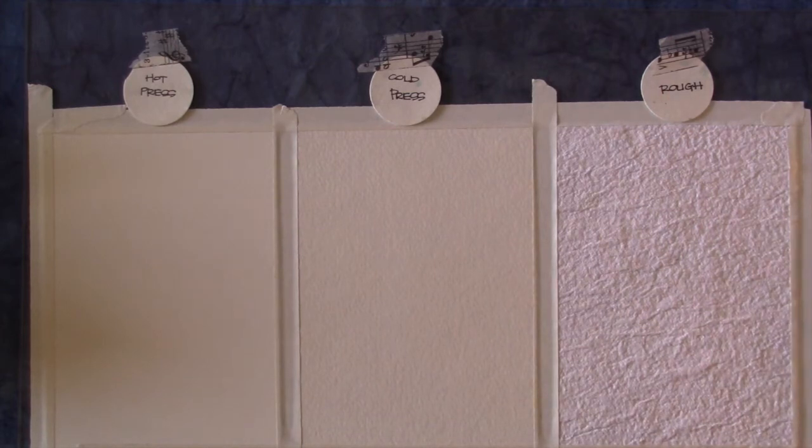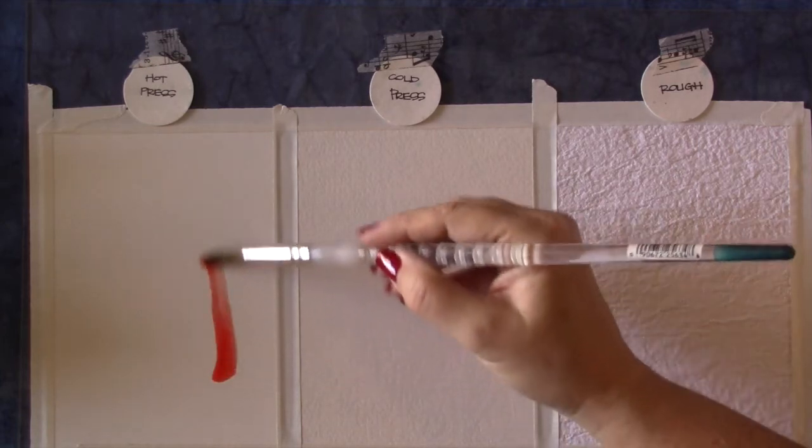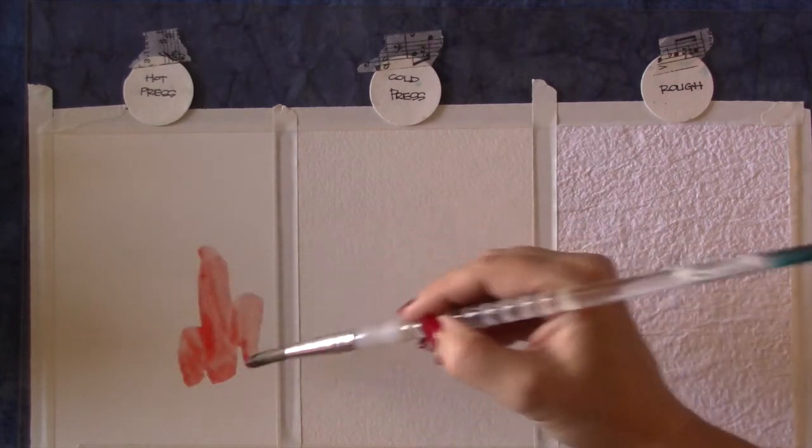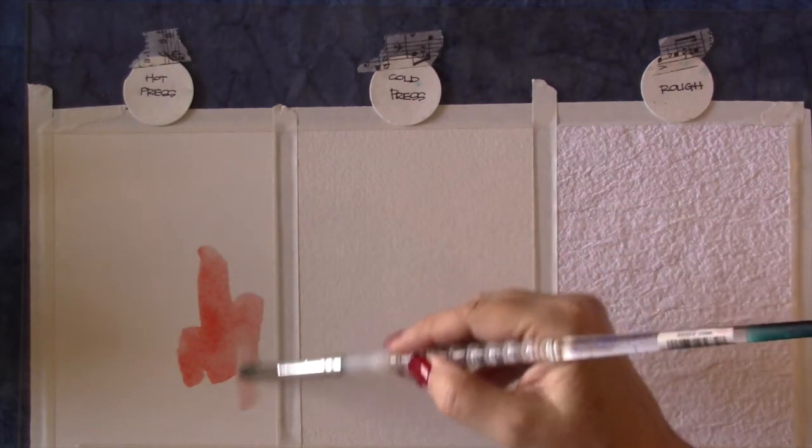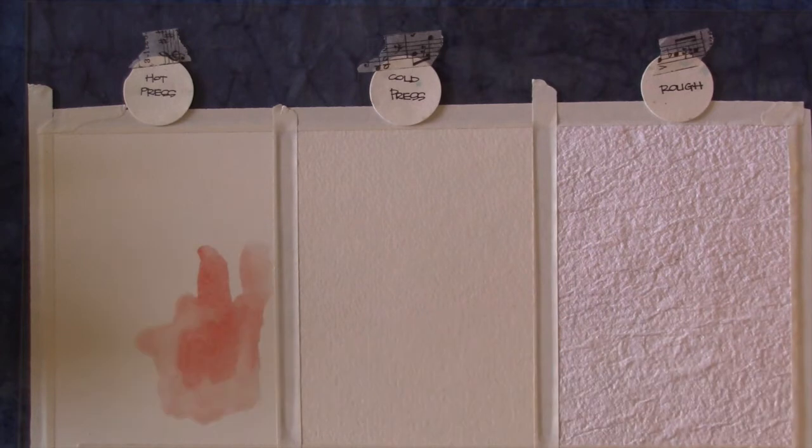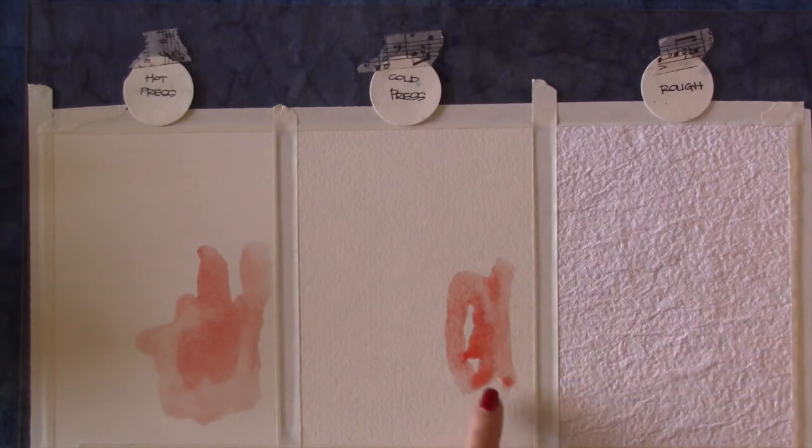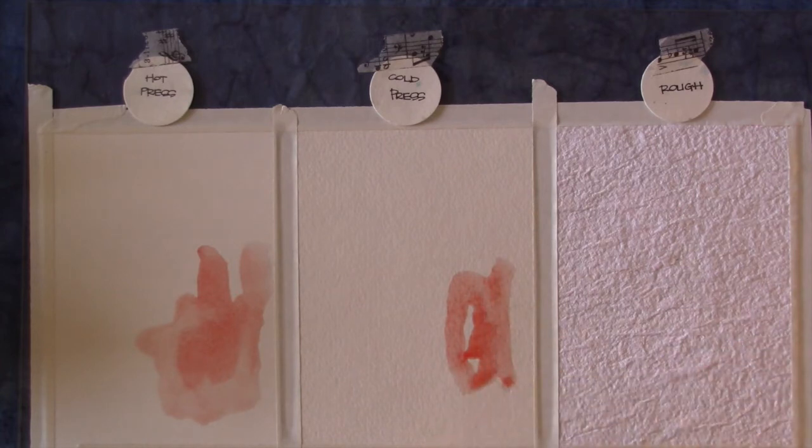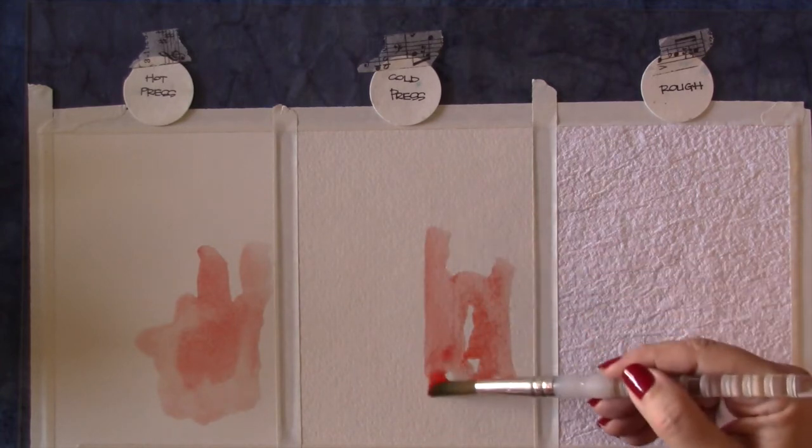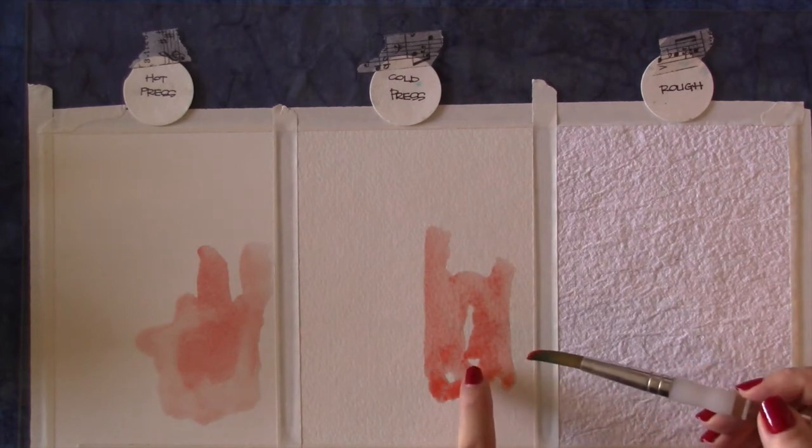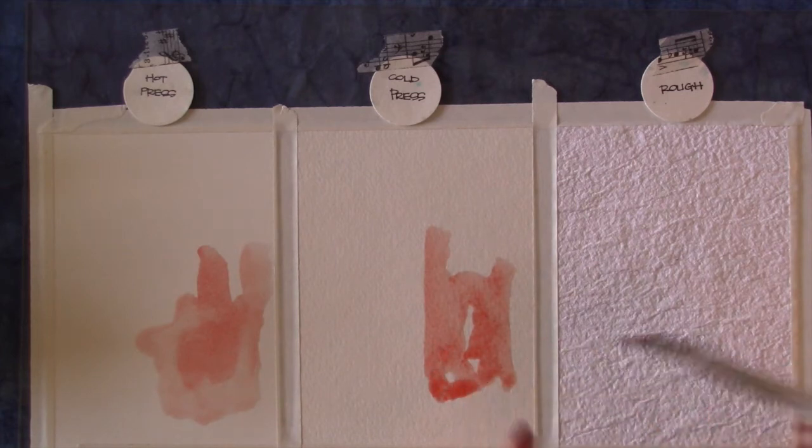I'm just taking a little bit of my cadmium red. When you apply it to the hot press, it goes on very smooth. When you come to the cold press, you can see that it starts - it's pretty watered down but some of it will start to settle into some of the valleys and give you a little bit more texture, which is a really nice effect and very unique.